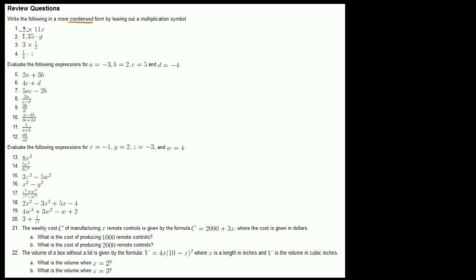Here we have 2 times 11x. If we have 11x's and we're going to have 2 times those 11x's, we're going to have 22x's. You could view this as 2 times 11x, which equals 2 times 11, all times x, and that's going to equal 22x. You had 11x's, you're going to have 2 times as many, so you get 22x's.